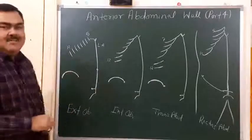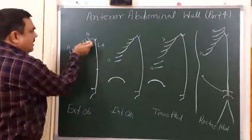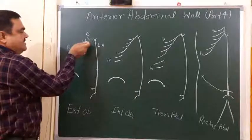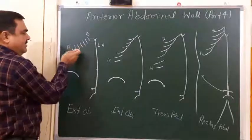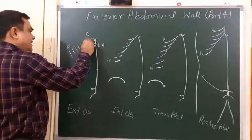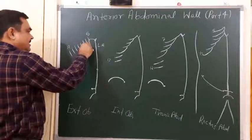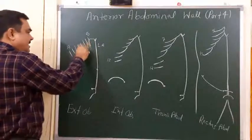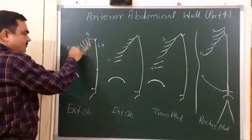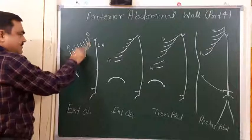The external oblique muscle takes origin from the lower 8 ribs — 5th, 6th, 7th, 8th, 9th, 10th, 11th, and 12th ribs. The direction of the muscle fiber is directed downward, forward, and medially. This is the direction of the muscle fiber.